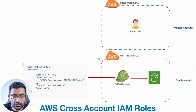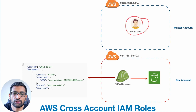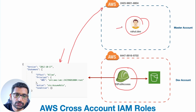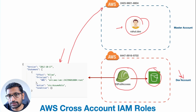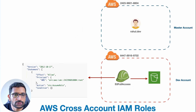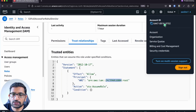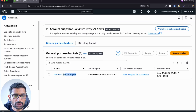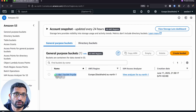Let's go back to the drawing board and recheck what we've done. We created the user, created the role, created a trust policy allowing the master account to assume the role, and this role will be assumed by rahul.dev. Now let me show you the S3 bucket in the dev account. Switching back to the dev account, I'll type S3 and here you can see the S3 bucket I created, which we'll view by assuming the role as rahul.dev.